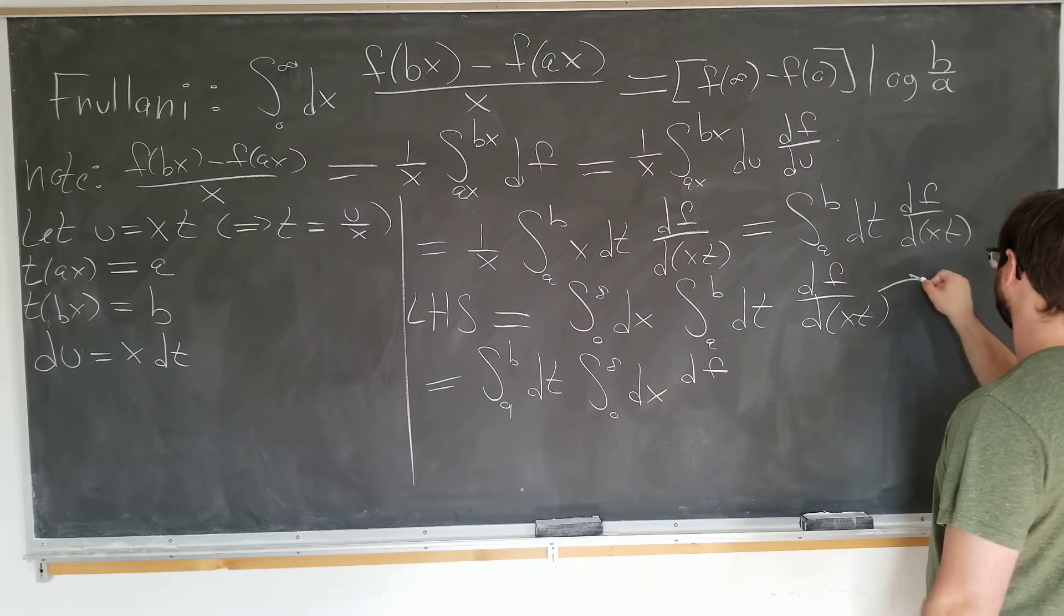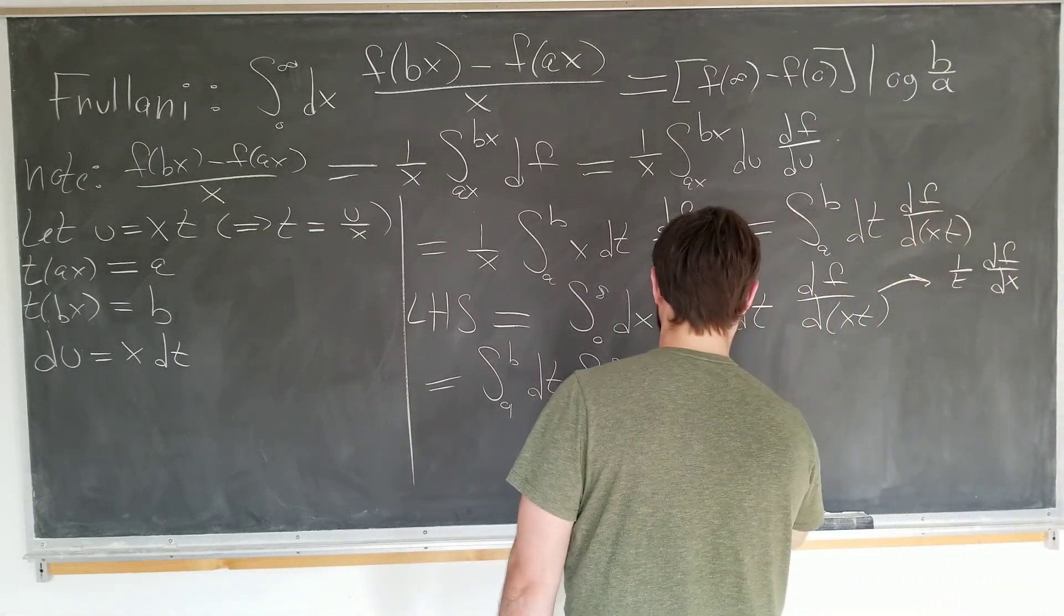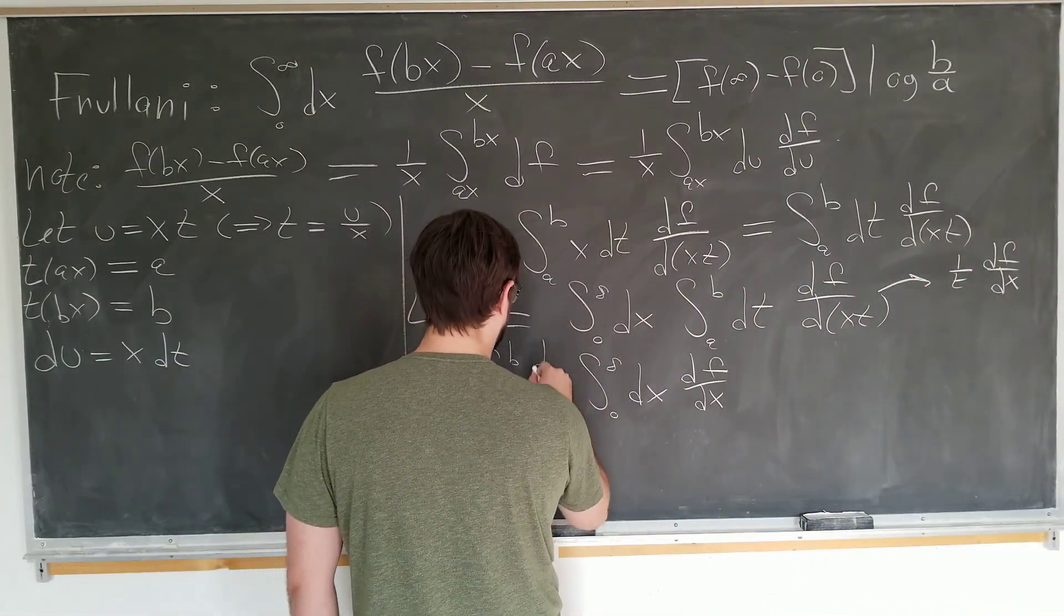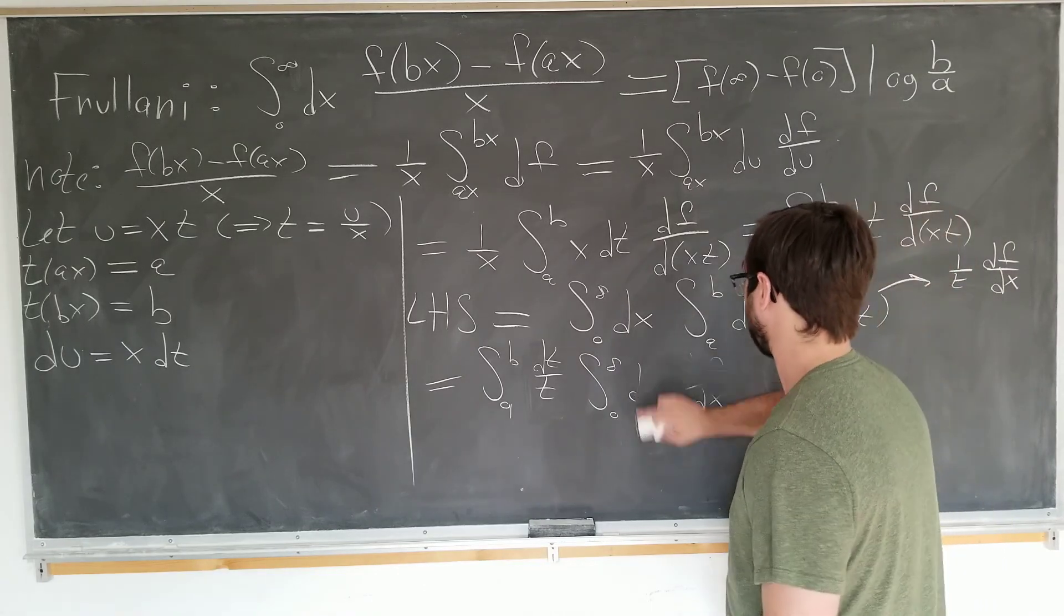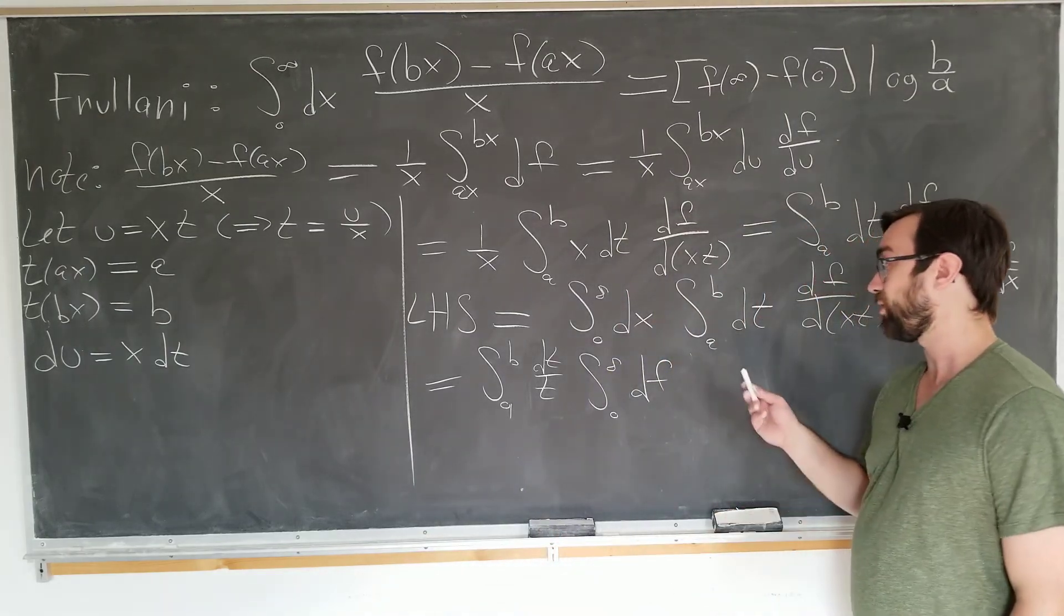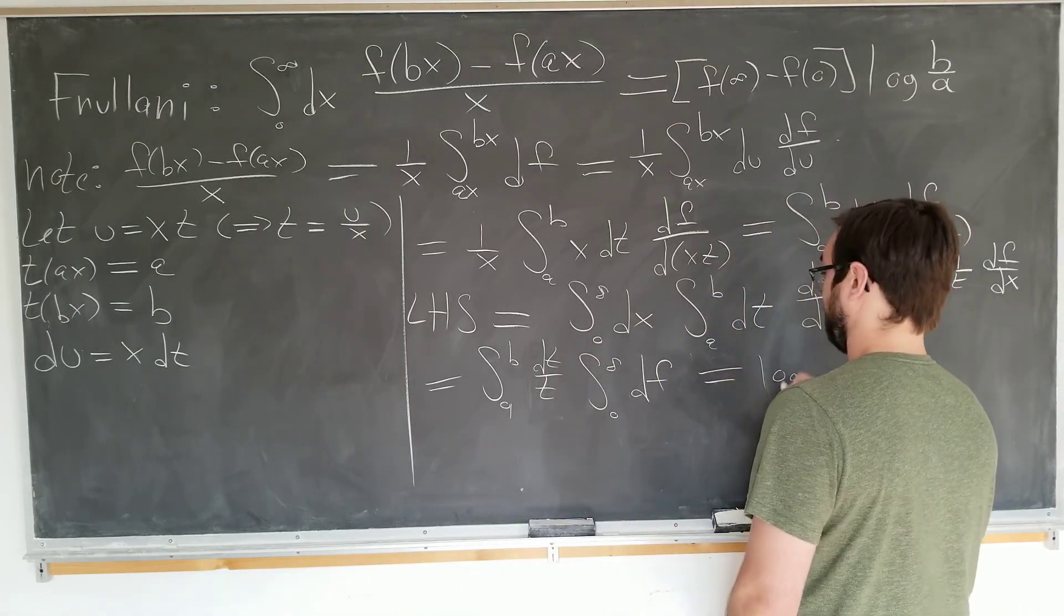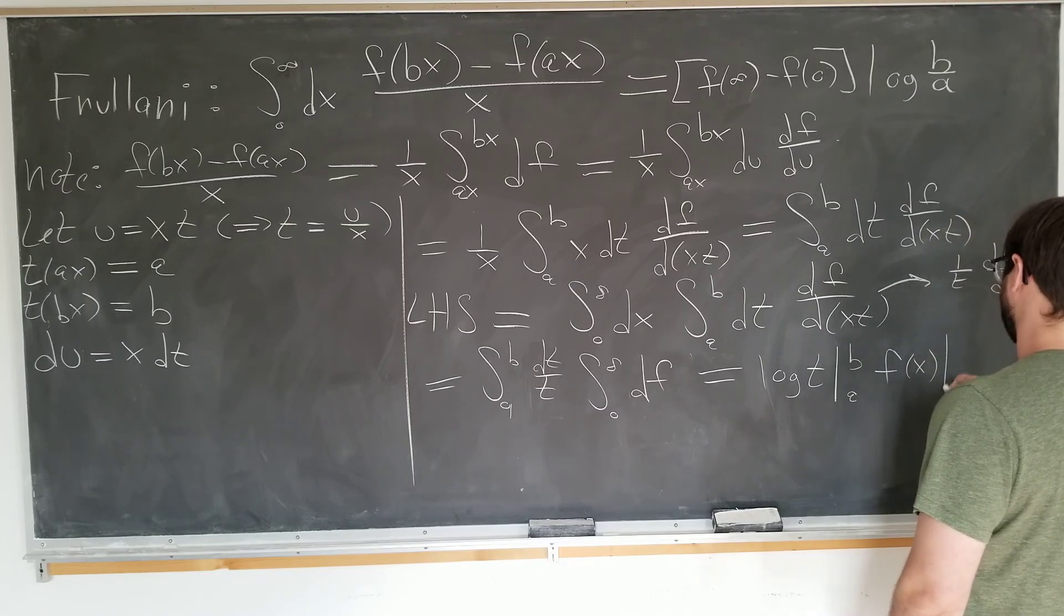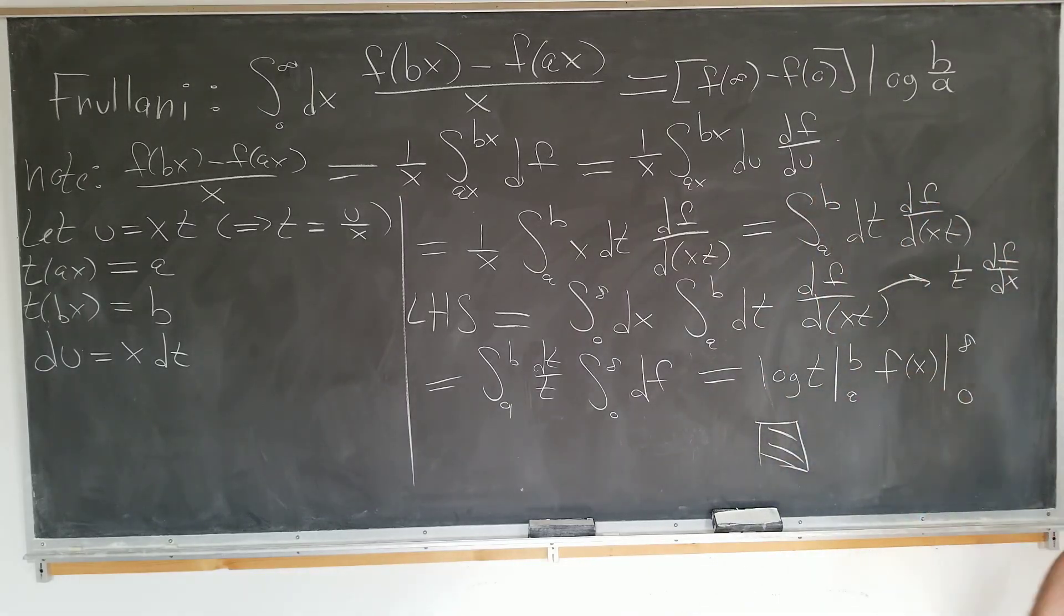We can go ahead and interchange the limits of integration. a to b now. Now we have df by dxt. We're going to write this as 1 over t df by dx, since we're switching the limits now. And we might as well put the t over here, since that's where it belongs with the t integral. And we're basically done. So we see that these dx's cancel because of the chain rule. So this just becomes df. And we can go one more step if you want, but you can definitely see we have a log and we have the function. So this is just going to be log of t evaluated at b and a. And we're going to have f of x evaluated at infinity and 0. And that's exactly what we have at the top of the board there. So we're done.